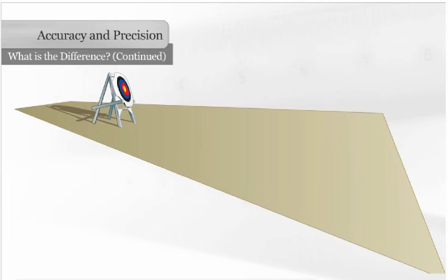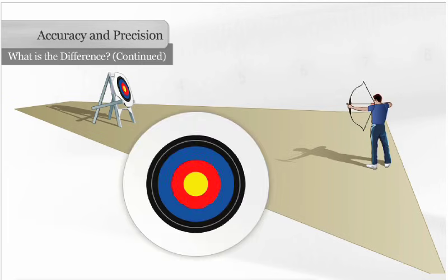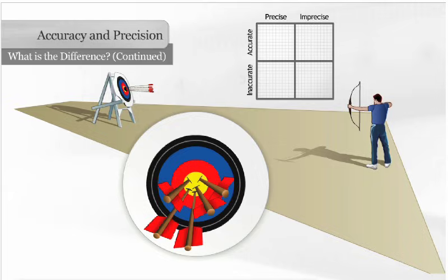Let us look more closely at the difference between accuracy and precision using an archer and target. The archer is accurate when he hits the bullseye. He is precise when he can consistently hit the same spot on the target, in this case the bullseye, over and over again.